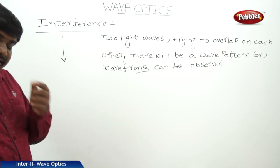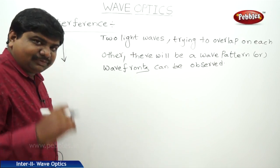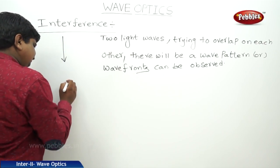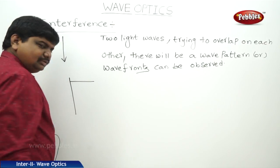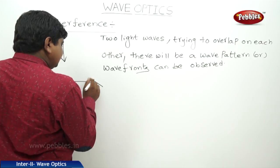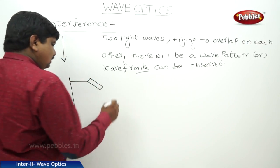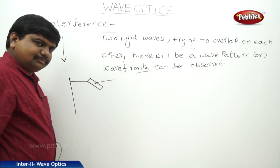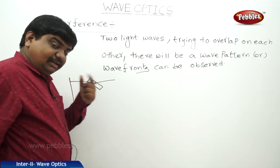In Newton's rings experiment, there is a retard stand. For this retard stand, they arrange a glass. On to the glass, one light is incident. This glass can refract the light, coming from the sodium lamp.